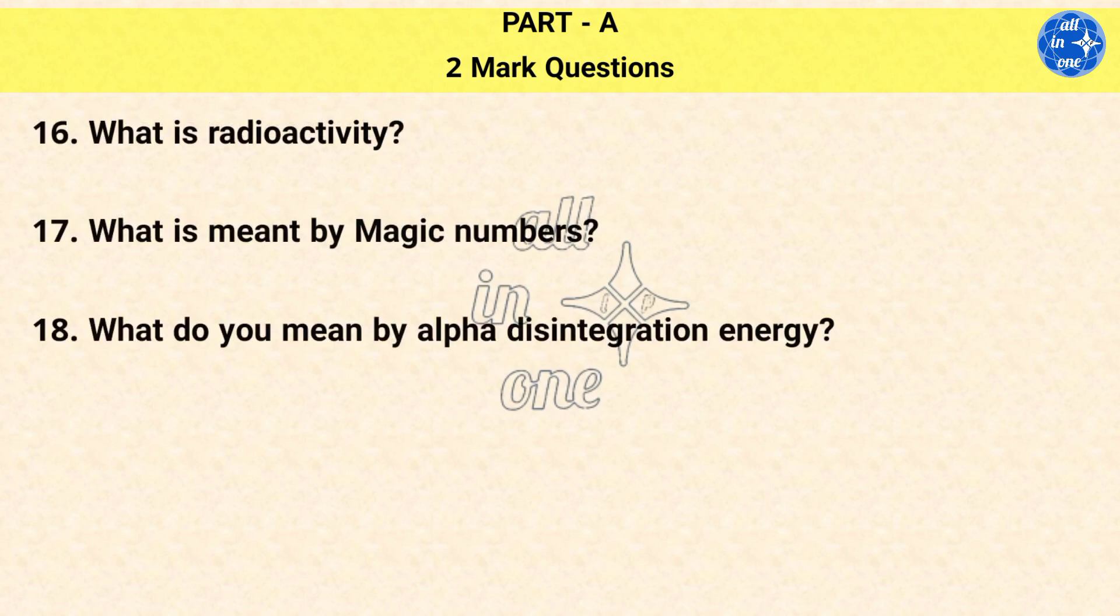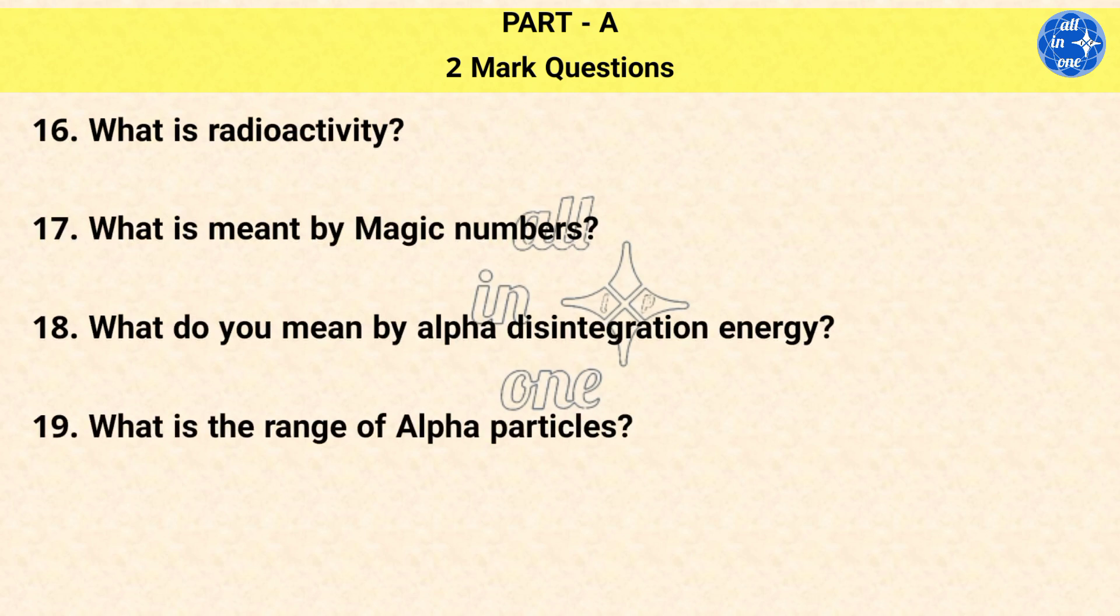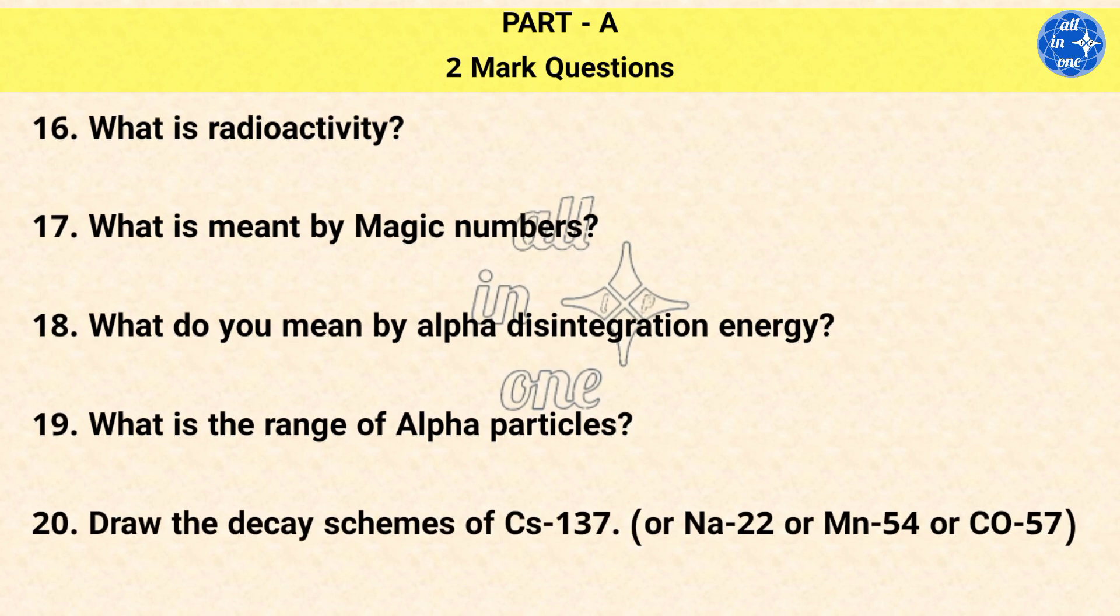Question 18: What do you mean by alpha disintegration energy? Question 19: What is the range of alpha particles? Question 20: Draw the decay schemes of Cs-137 or Na-22 or Mn-54 or Co-57.